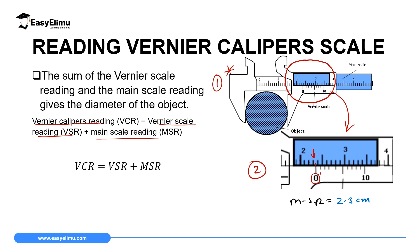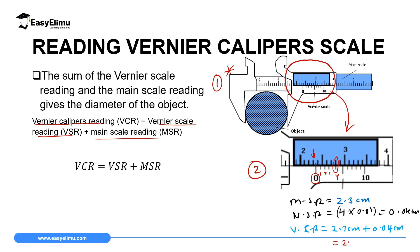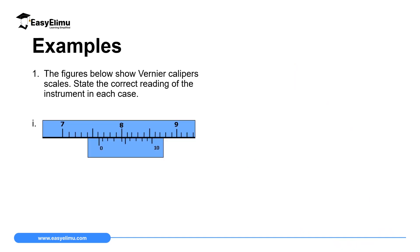For the Vernier scale, the first, second, and third marks do not coincide, but the fourth one coincides with the main scale. So the Vernier scale reading is 4, multiplied by the accuracy 0.01, giving 0.04 centimeters. The total reading is therefore 2.3 + 0.04 = 2.34 centimeters. Notice the number of decimal places equals that of the accuracy, 0.01.